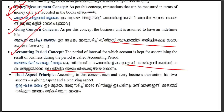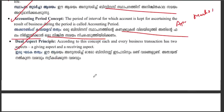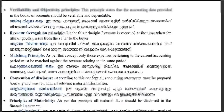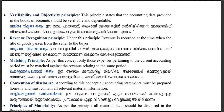The accounting period concept divides the life of a business into defined periods so that results can be reported for each period. The dual aspect principle means every transaction has two aspects: a giving aspect and a receiving aspect.